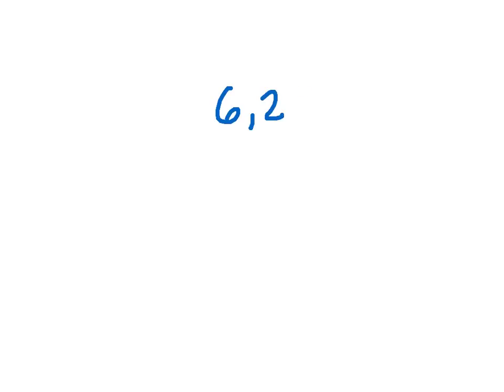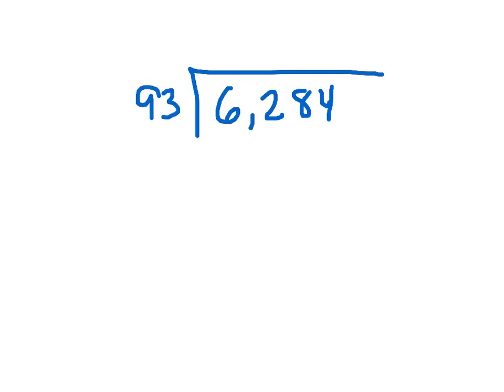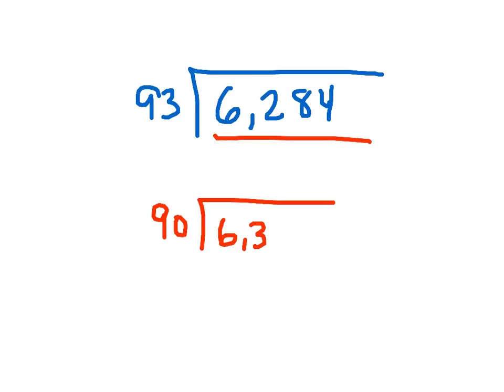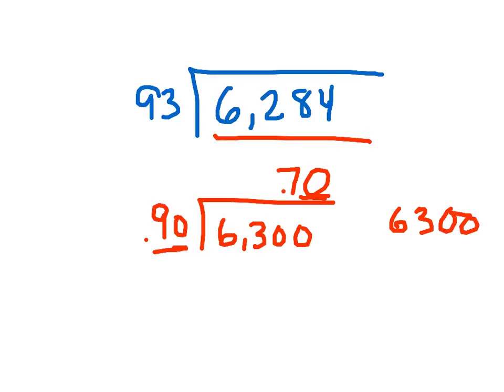Let's try one more before I turn you loose. We're going into thousands: 6,284 divided by 93. Search for those compatible numbers. I'll give you a hint — I'm going to go 90 for the divisor. What am I going to do with the dividend? 6,300. How many times does 90 go into 6,300? That would be 70 times. You can see that 7 times 9 gives me 63, plus a zero and a zero — that's 6,300. So the estimate is 70.